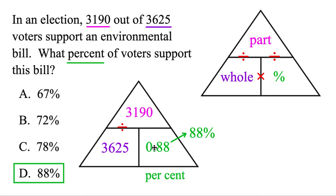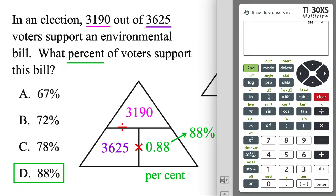But what's nice is you could double check the answer you got. The whole and the percent are next to each other. You could use multiplication. And multiplying these two, we should get 3,190. So let's just double check. 3,625 times our 88%. And sure enough, we get 3,190. So they all fit perfectly within that triangle there.